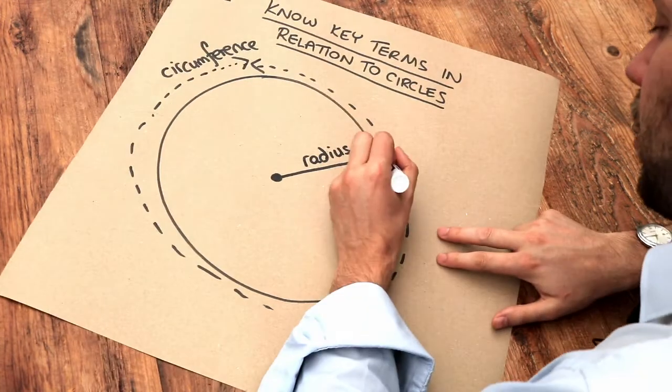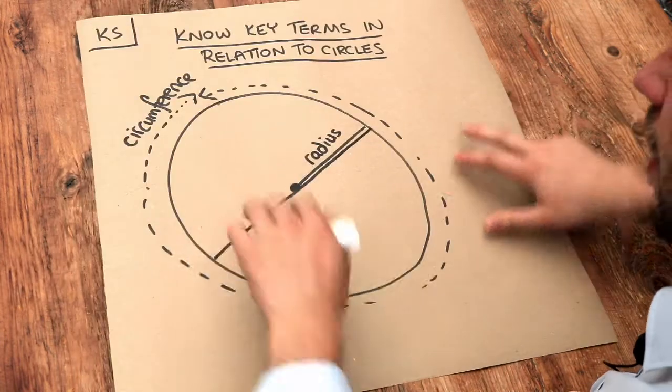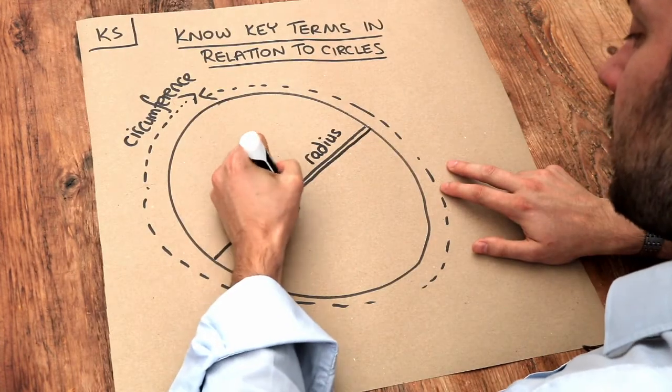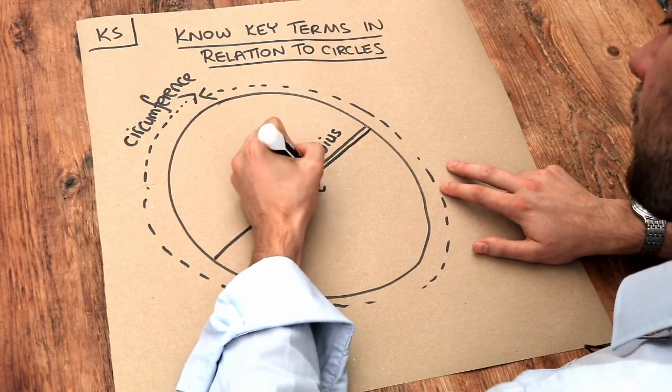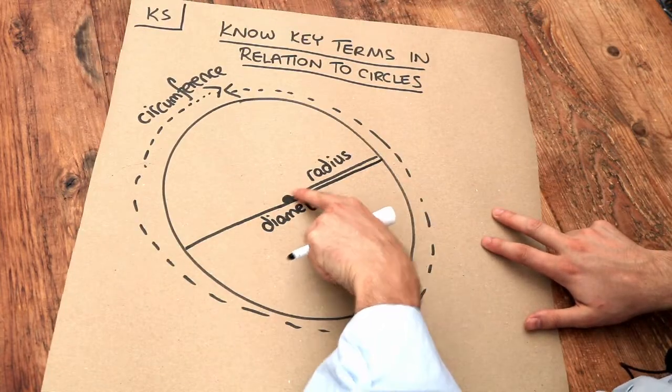And if we have a line that goes all the way across the circle through the center, that is known as the diameter of the circle. Notice that the diameter of the circle is twice the length of the radius.